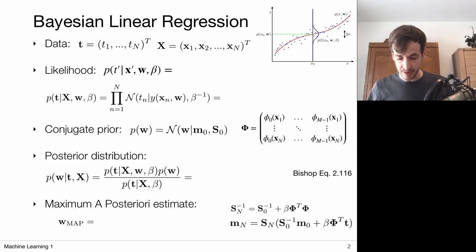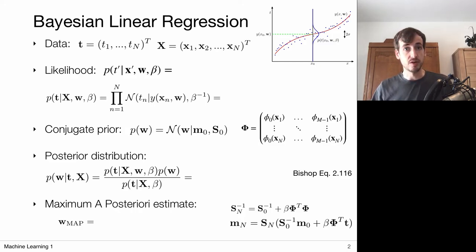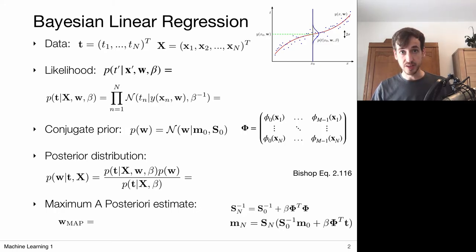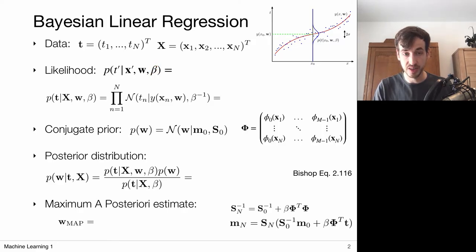Let's quickly go over the probabilistic setting again. We're dealing with data input-output pairs, and we're going to put all our observed data variables in the data matrix X, and the corresponding targets in one target vector T. Our goal is to recover the probability distribution that may have generated this data, so we're going to work with predictive distributions. Given an input data point X prime, we predict the probability for the corresponding target value. Such a probability distribution is parameterized by a set of weights W and some hyperparameter beta, which is the precision of our distribution.